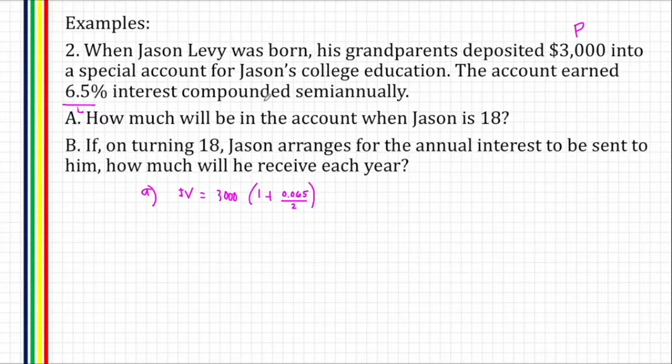Then, how many compounding periods for 18 years? The term is 18 years, but it will compound twice a year. Therefore, we'll multiply it by 2. Now, the future value when Jason turns 18 is equivalent to